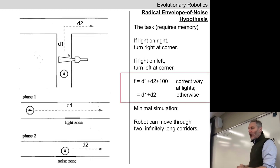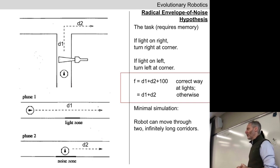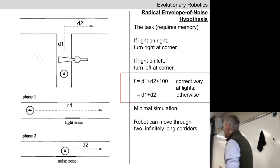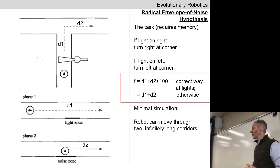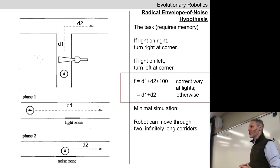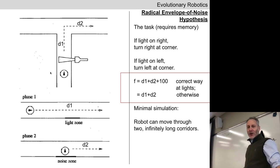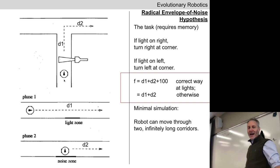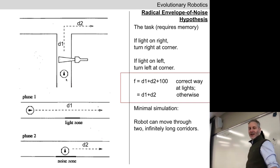They're going to evolve this robot in a simulator to solve a very old problem taken from psychology. Psychologists love to put rats in mazes — this is the T-maze. We're going to place a robot in the T-maze, but imagine we put a rat there instead. We put the rat in the base of the T, and the rat starts wandering around.